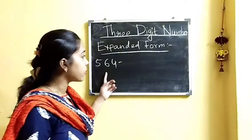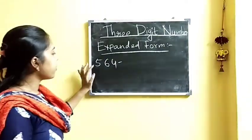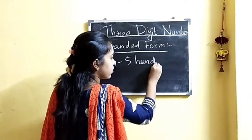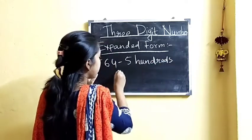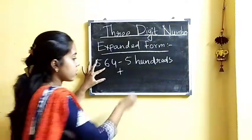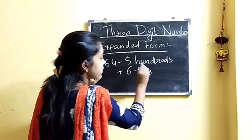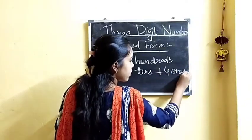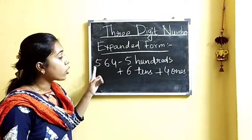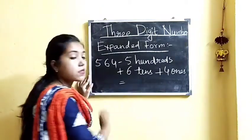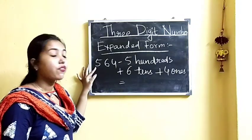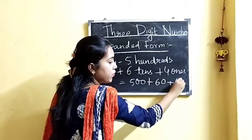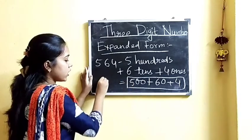Now let us write this number in expanded form. Here we have 5 hundreds, so we write 500. Plus 6 tens, as there is 6 in the tens place. And 4 ones. We can also write this as the sum of its place values: 500 + 60 + 4. So this is the expanded form of this number.